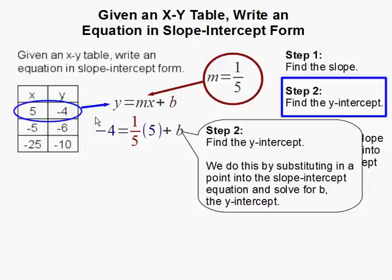So negative 4 gets substituted in for y. M is our slope and I'm going to substitute that with 1 fifth. And x gets substituted in with 5. And that leaves us with b left to solve.